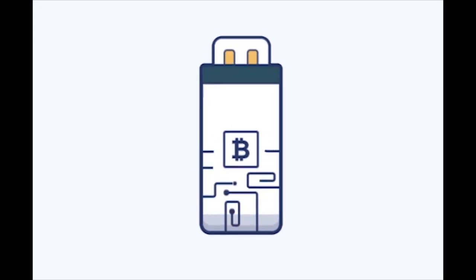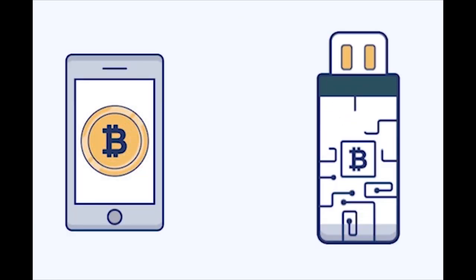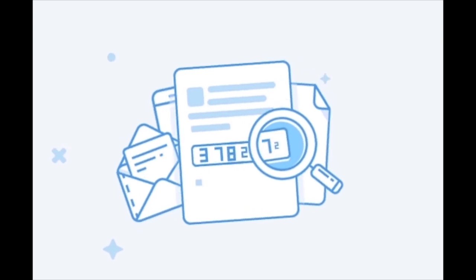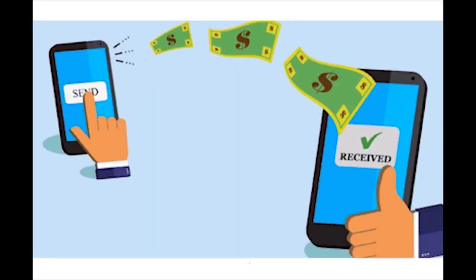Alternative options to software-based wallets are: one, hardware-based wallets. Hardware-based wallets store your private keys on a hardware device like a USB. Hardware wallets make transactions online; however, unlike software-based wallets, they do not keep or store your private key online. Number two, paper-based wallets — a printable type of wallet where you keep your private and public keys on a piece of paper so that you can send and receive cryptocurrencies.